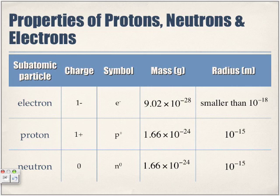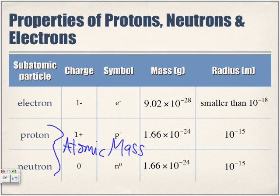Notice the size of the proton and neutron are the same. If we combine the number of protons with the number of neutrons, we get the atomic mass. The electrons play no real role in the atom's mass because they are so small — the real mass lies entirely within the nucleus.